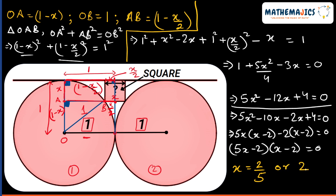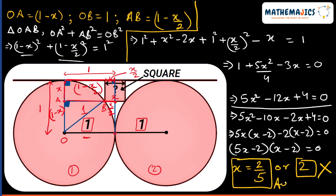We have two values of x: from the first bracket we get x = 2/5, and from the second bracket we get x = 2. Now, the radius of the circle is 1 and the square is very small compared to the circle, so the side length cannot be 2. Therefore the answer is x = 2/5.